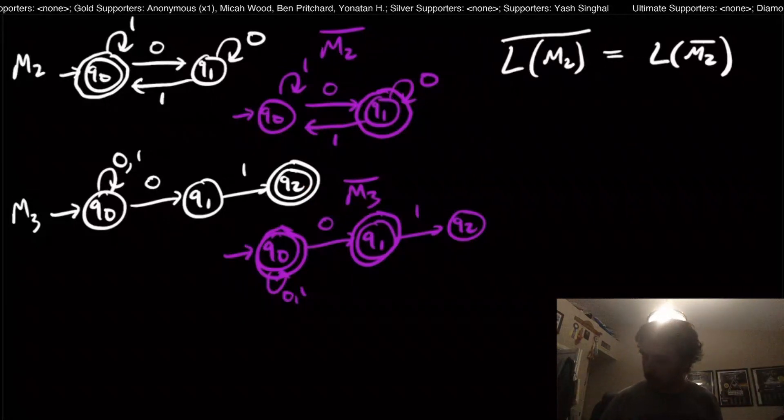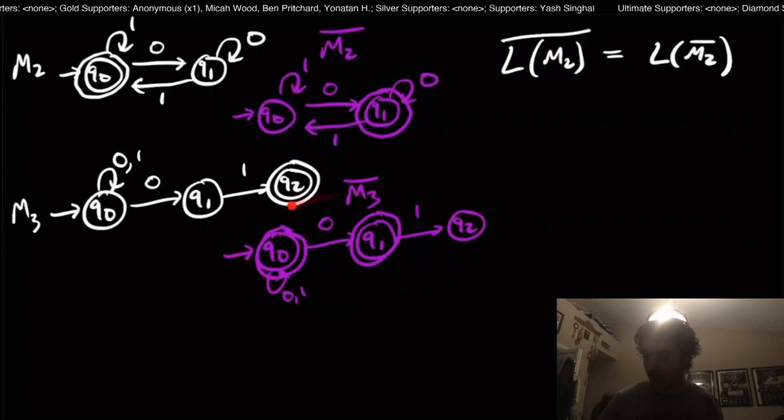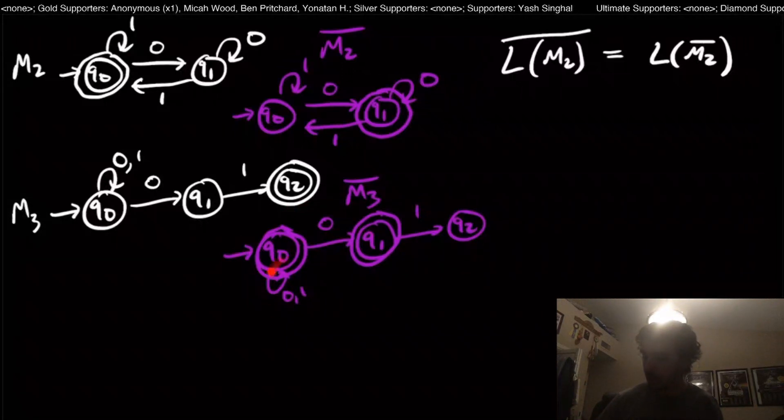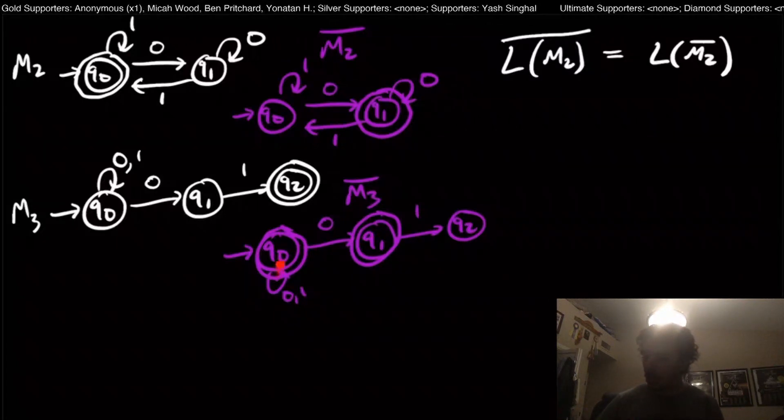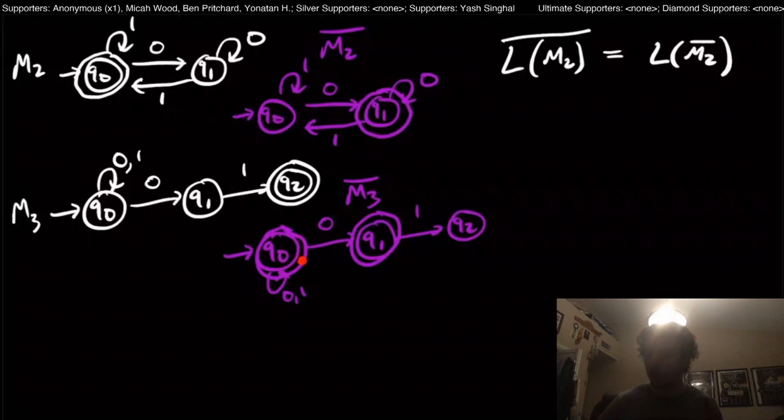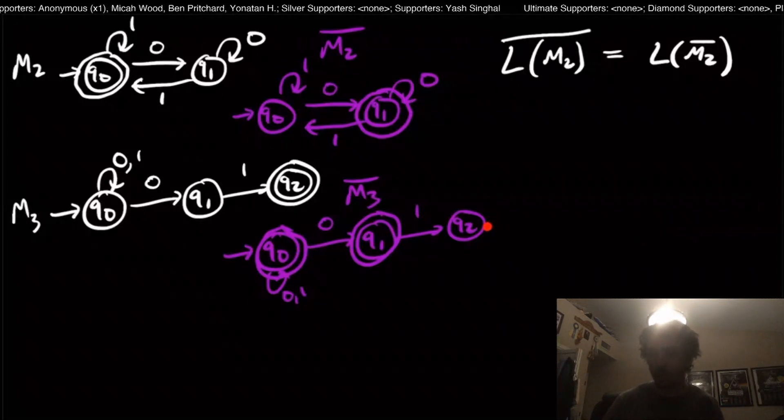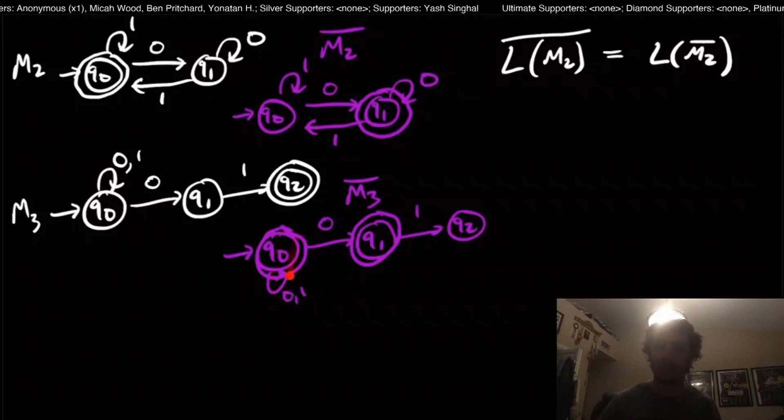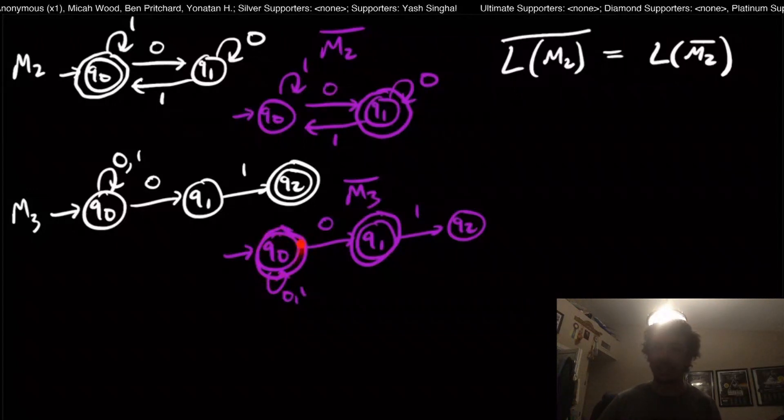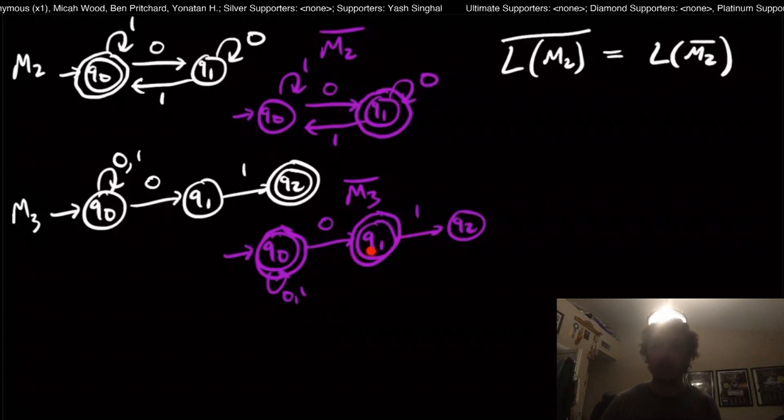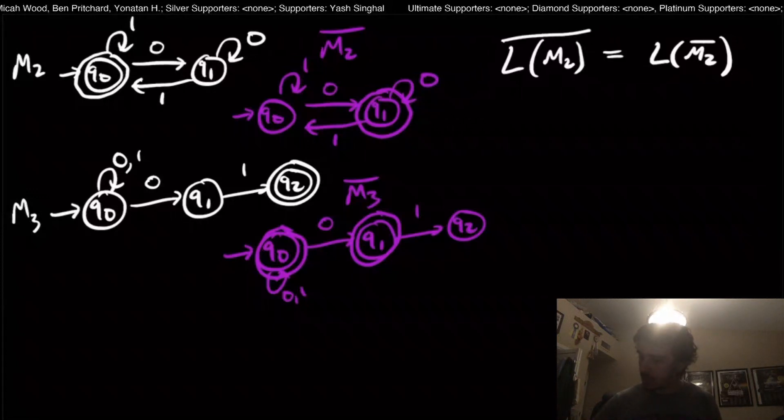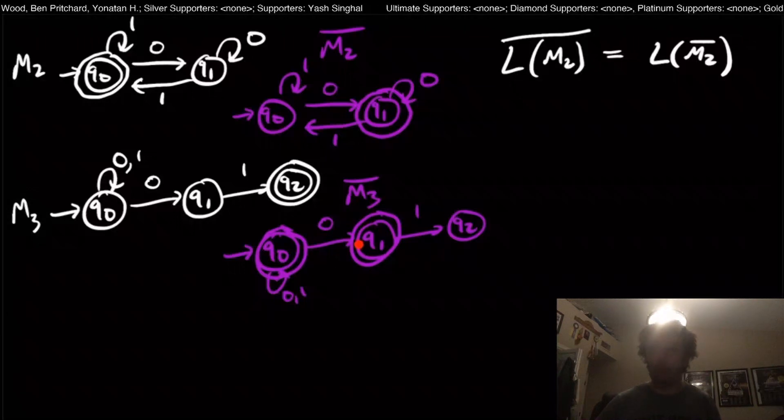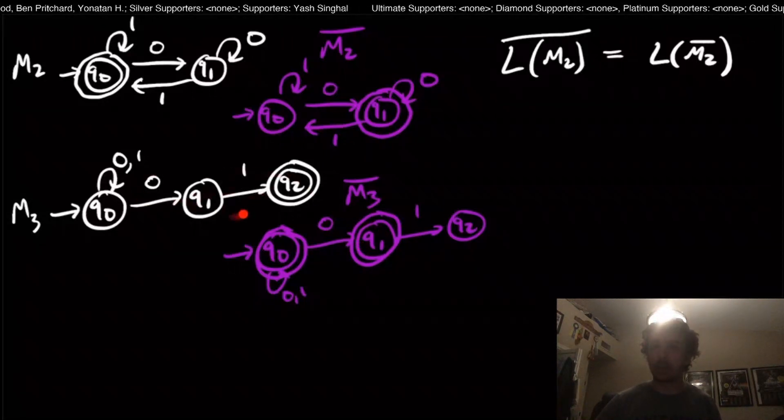Now look at this machine right here. We still have this non-deterministic choice of the 0 here and the 0 here, which means that I could, if I wanted to, just stay in Q0. I don't even have to bother going to one of these other two states because of this non-deterministic choice, and this state is a final state. So this machine actually right here is accepting Sigma star.